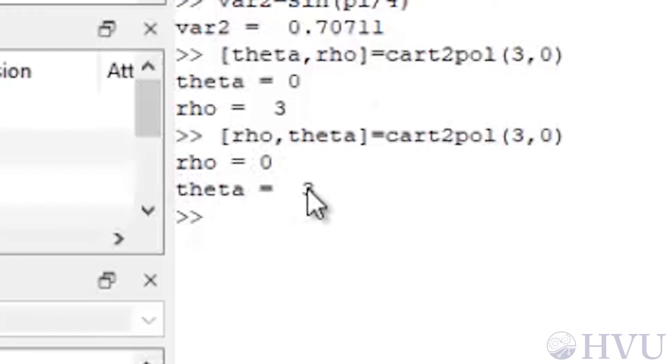The radial distance is returned as the first variable in the output argument list, which is now called θ. The second variable is the angular distance, which just happens to be the variable named ρ. Obviously, this can get confusing, so it's a good idea to give your variables meaningful names that reflect the values that they're assigned to.